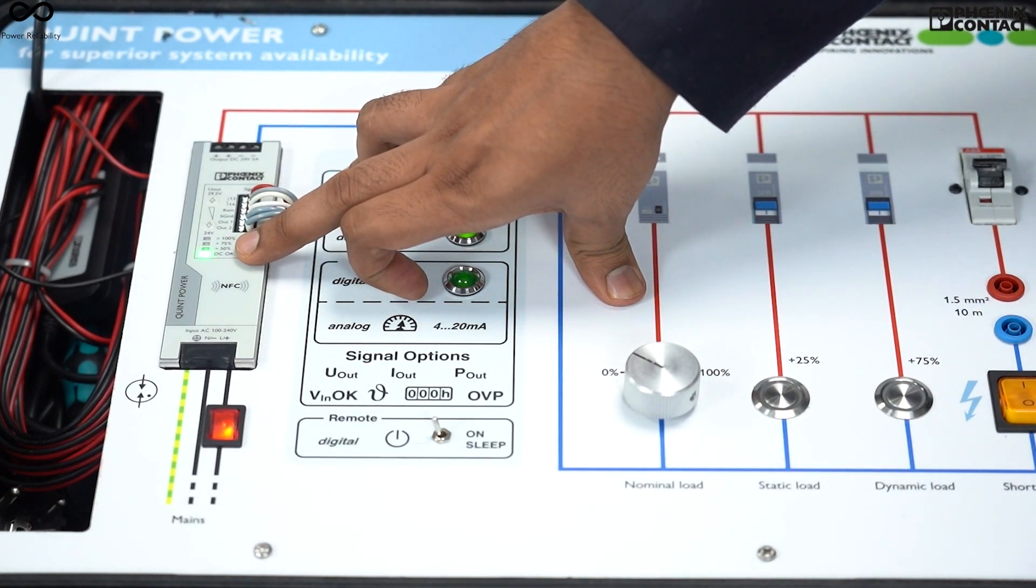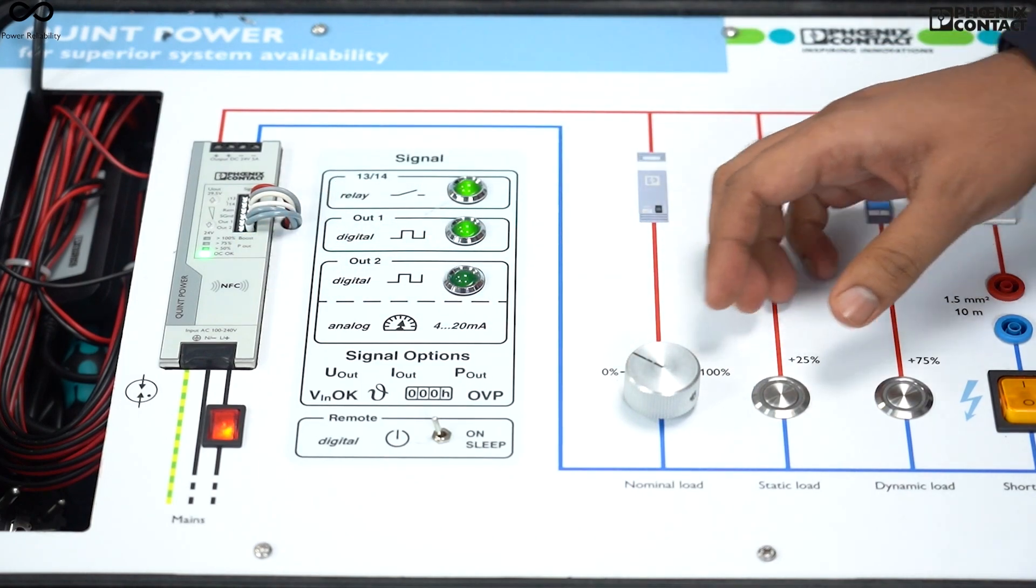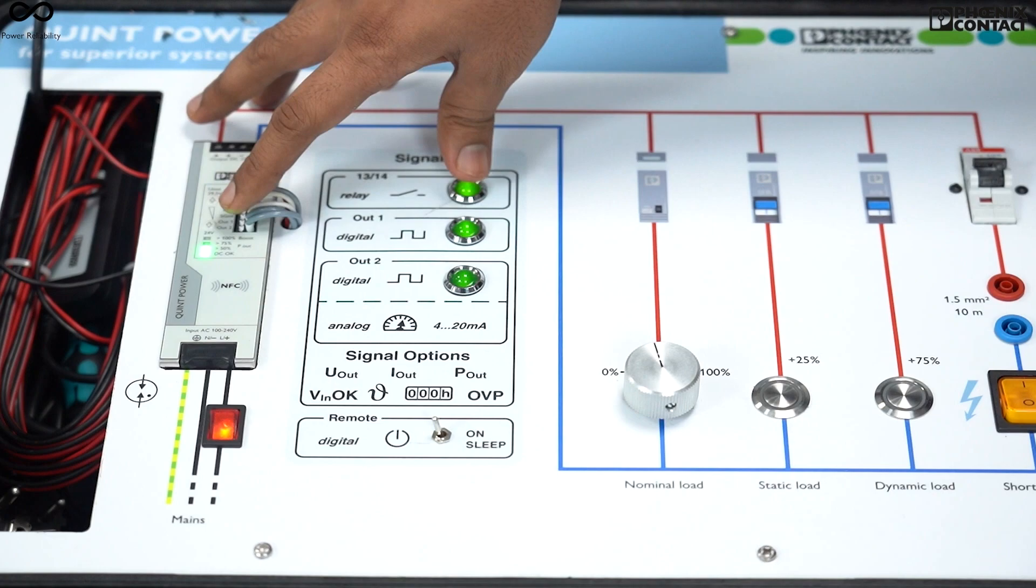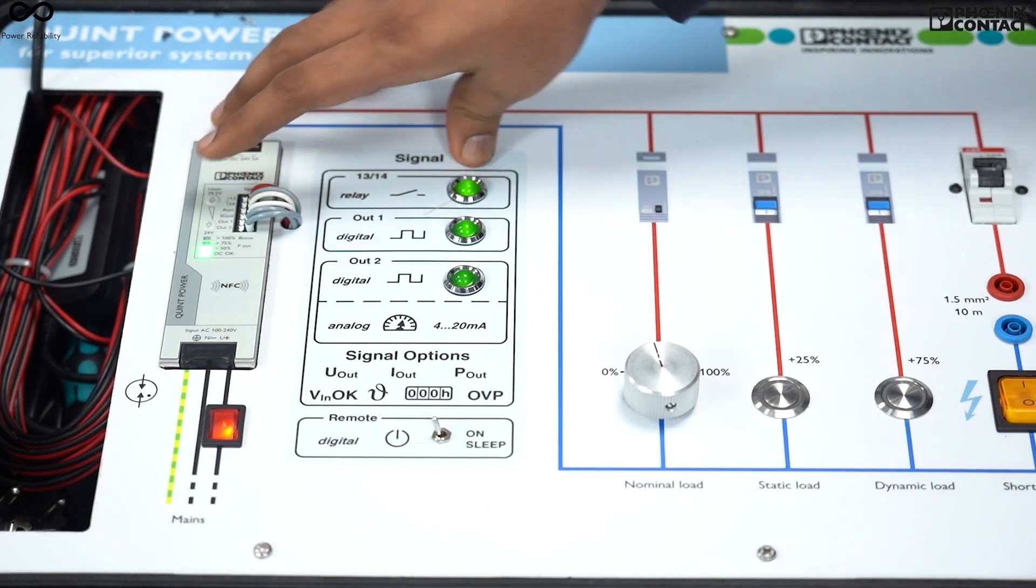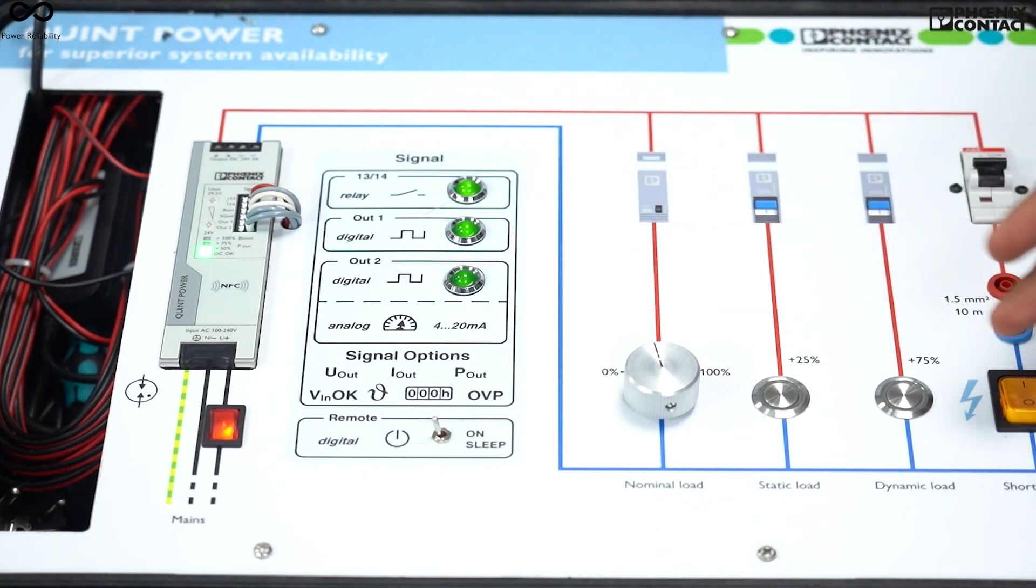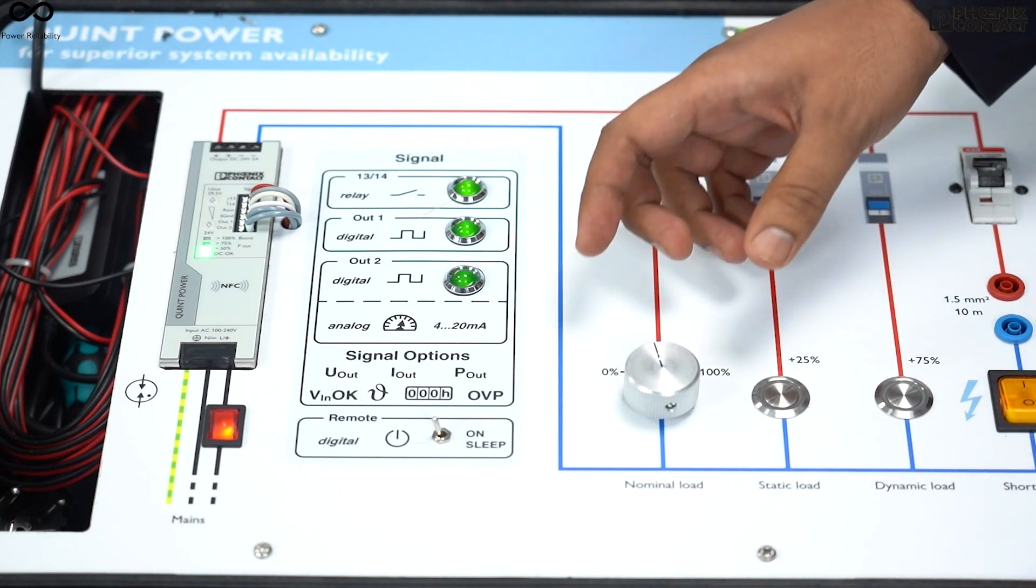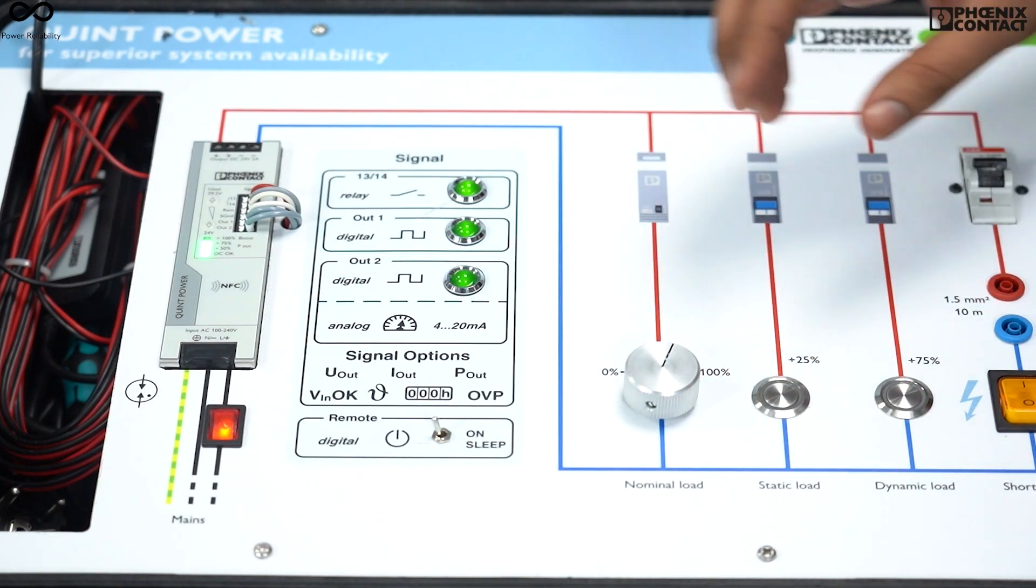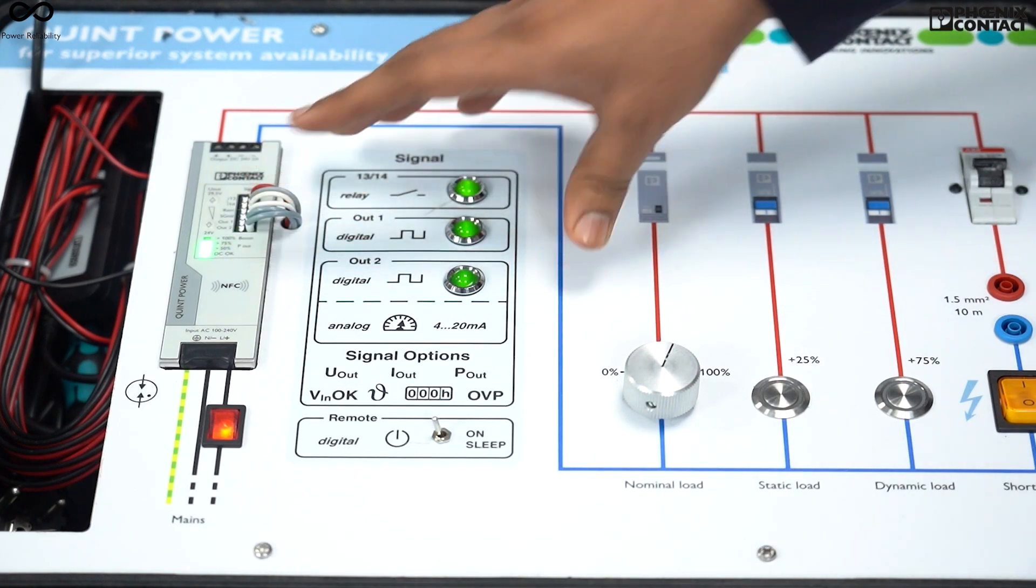Here you can see right now the power supply is on no load, so only DC OK LED is glowing. If I put 50 percent loading on the power supply, only the first LED starts glowing, which gives you the information that power supply is working up to 50 percent or less than 50 percent. Now again, if I increase the load like 70-75 percent, the third LED starts glowing.